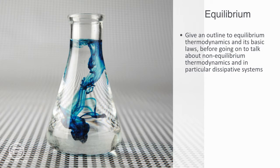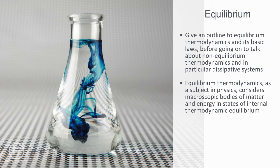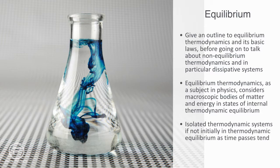Equilibrium thermodynamics, as a subject in physics, considers the macroscopic bodies of matter and energy in states of internal thermodynamic equilibrium. Thermodynamic equilibrium is characterized by an absence of the flow of matter or energy. More generally, equilibrium is a state where the system will not change unless given some perturbation from its environment. Isolated thermodynamic systems, if not initially in thermodynamic equilibrium, as time passes tend to evolve naturally towards this equilibrium, and in the absence of externally imposed forces, they become homogeneous in their local properties.